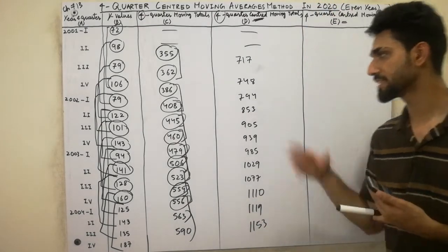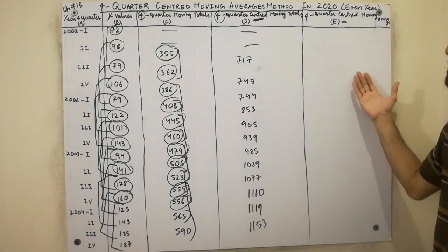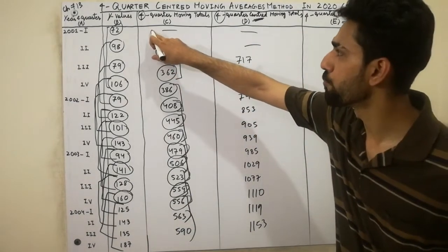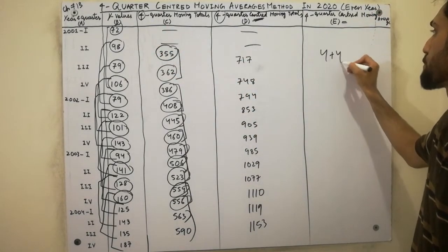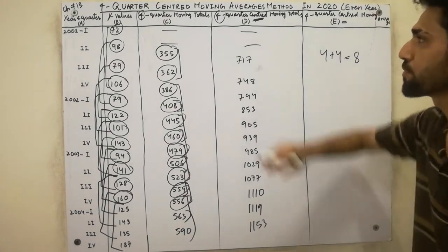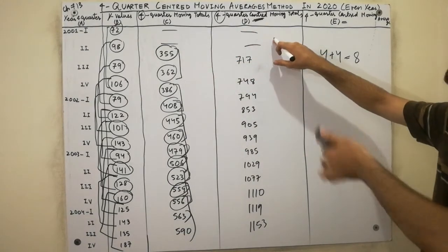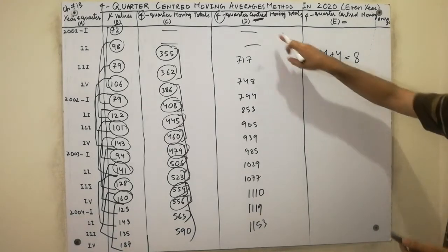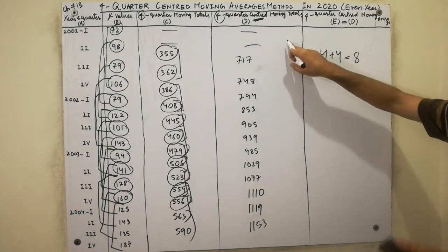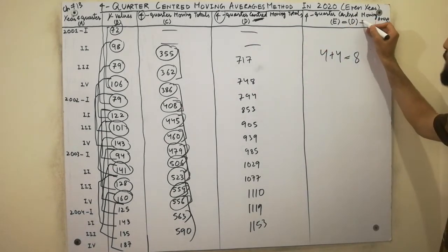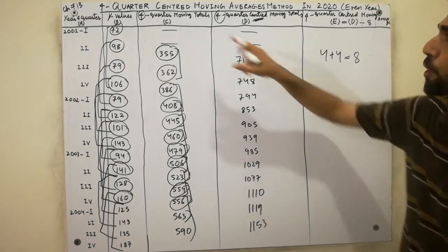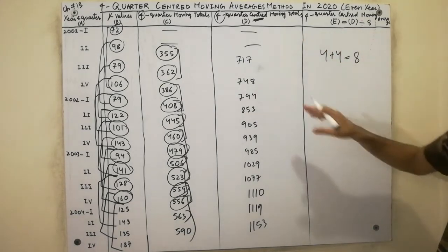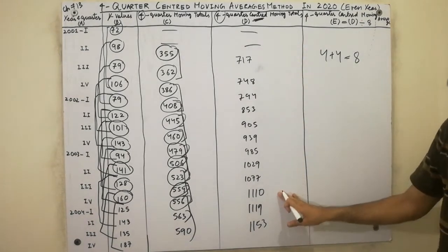So I hope that you have understood the 4-quarter centered moving total. This last portion is very very important for you — I will tell you a secret key point. We have 4 plus 4 is equal to 8. That is, 4 quarter moving total plus 4 quarter centered moving total gives us 8. This is column D — the 4 quarter centered moving total. We will divide each value in column D by 8. So must remember: 4 plus 4 equals 8, and we divide each D column value by 8.